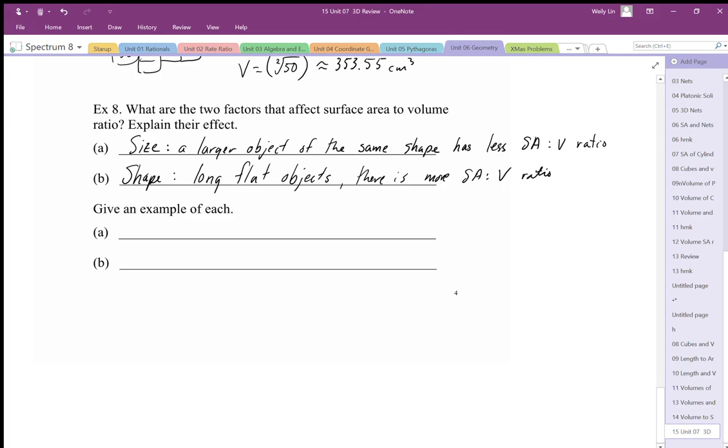Okay, so if you flatten out something really flat, you have very little volume, but you have lots of surface. So you have a large surface area to volume ratio.